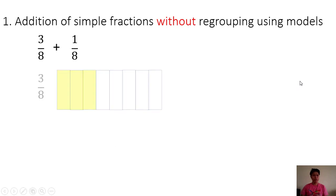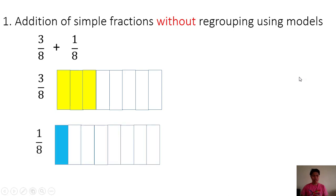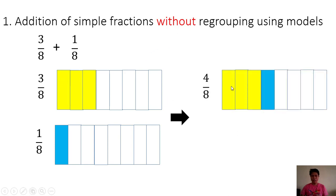Since we are going to use models, we will draw first these two fractions. We have 3/8 — that is 3 shaded parts out of 8 parts. And we have also 1/8. Then we are going to combine these two shaded parts. We have the 3 yellow shaded parts and the 1 blue shaded part, for a total of 4 out of 8 shaded parts.